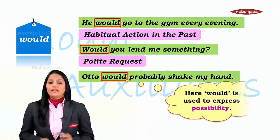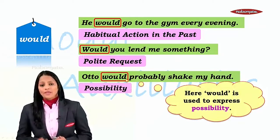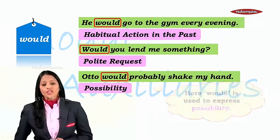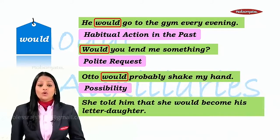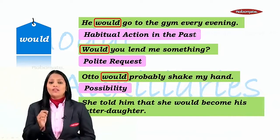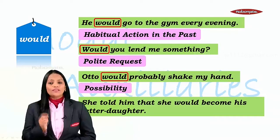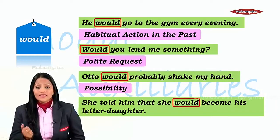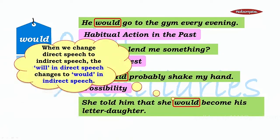One more: 'Otto would probably shake my hand.' This is clearly a possibility — it may happen. So 'would' can express possibility. Next: 'She told him that she would become his daughter.' What do you understand by that? It is indirect speech.